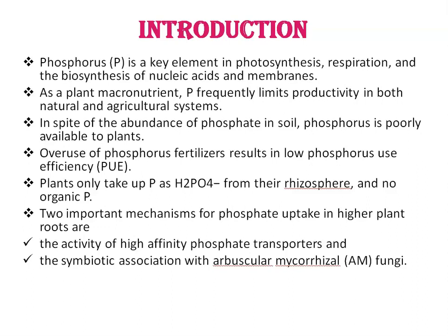Important mechanisms for phosphate uptake in higher plant roots are: number one, the activity of high affinity phosphate transporters, and number two, the symbiotic association with arbuscular mycorrhizal fungi. There is a strong relationship between the primary mechanisms of phosphorus uptake and phosphorus transporters, regulators, root architecture, metabolic adaptations, quantitative trait loci, hormonal signaling, and microRNAs.